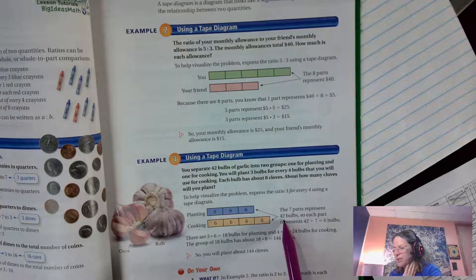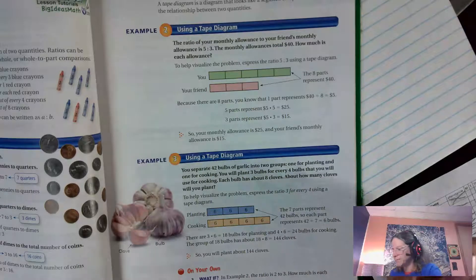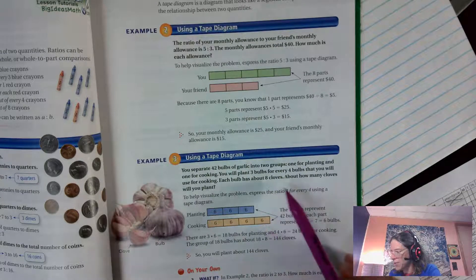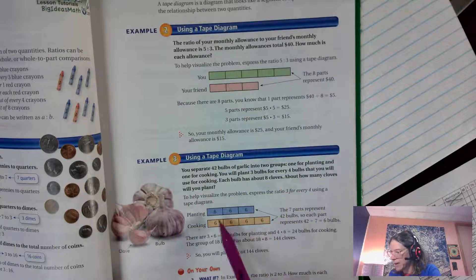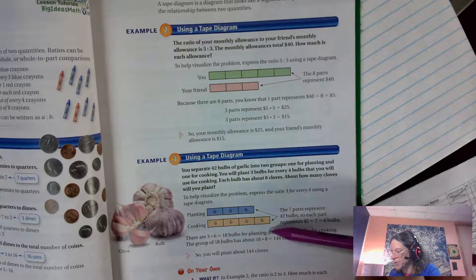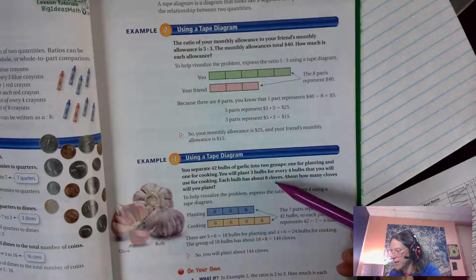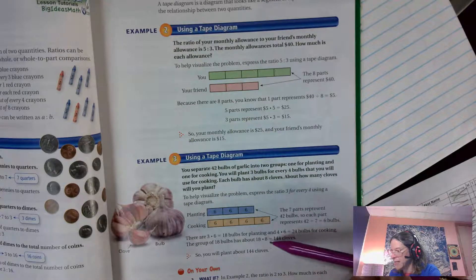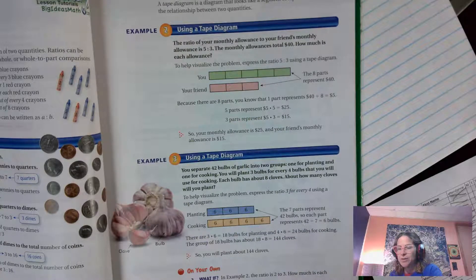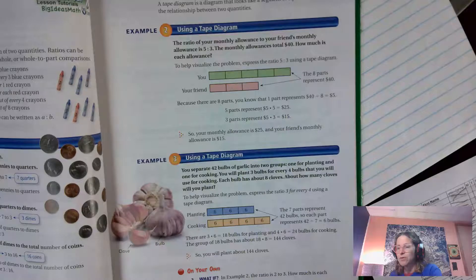And if the question is how many cloves will you plant, so I take my eighteen planting bulbs. I have to go back to my story problem. Each bulb has about eight cloves, so eighteen times eight is a hundred and forty-four cloves. I'll plant about a hundred and forty-four bulbs or cloves of garlic, and each clove makes a bulb. So delicious, it's coming in your future.